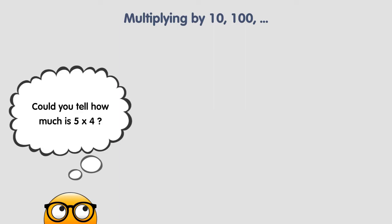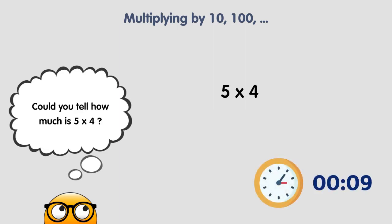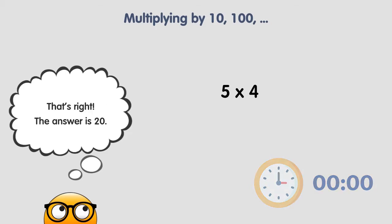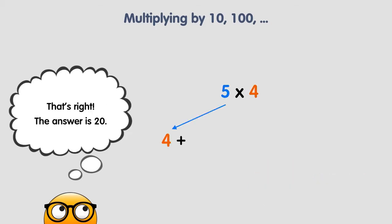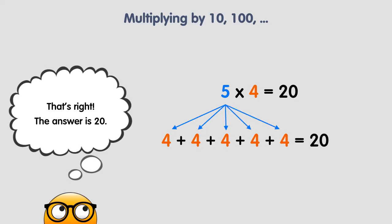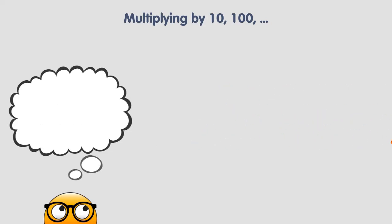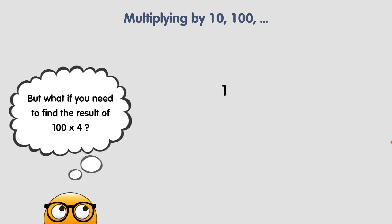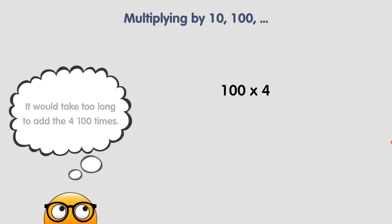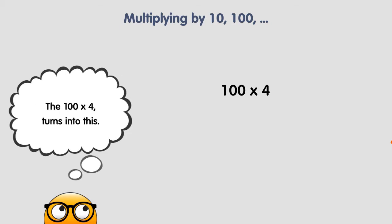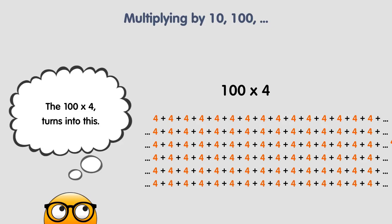Could you tell how much is 5 times 4? The answer is 20. But what if instead you needed to find the result of 100 times 4? It would take too long to add the 4 one hundred times. The 100 times 4 turns into this. This is a very long summation.